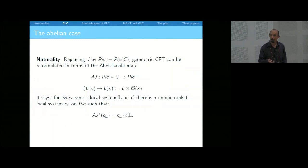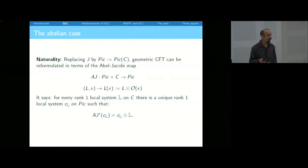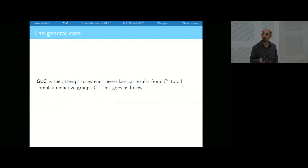The version in terms of the Jacobian was a little unnatural. It becomes more natural when you replace the Jacobian by the Picard, and the Abel-Jacobi map by the tensorization operation, which gives a map from Picard cross C to Pic. Fixing a point in Picard gives you the Abel-Jacobi map from C to the Jacobian in a way that does not require the choice of a base point. Geometric Langlands is the attempt to extend these classical ideas from the abelian group C-star to all complex reductive groups G.